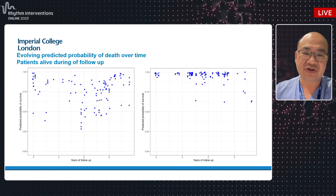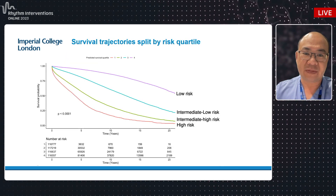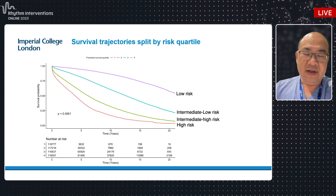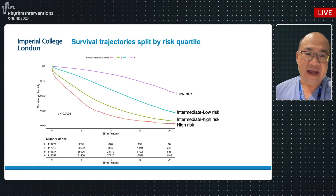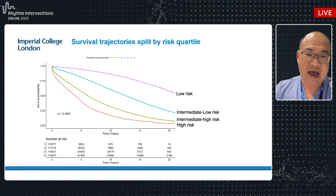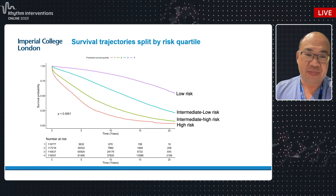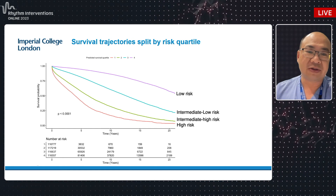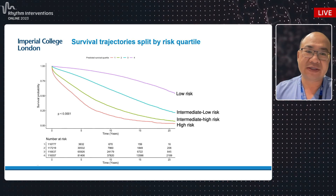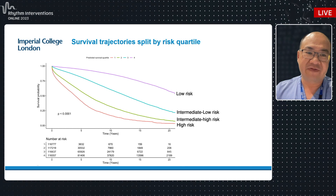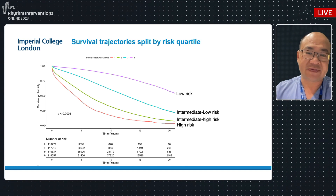For two individuals with multiple ECGs who did not die, all the blue dots stay fairly high in the predicted survival probability rather than dropping toward zero. At the population level across over 100,000 individuals split into risk quartiles, if the AI model predicts someone to be high risk they are almost all dead by 10 to 20 years, whereas a low-risk prediction means a very good chance of survival over a 20-year horizon.